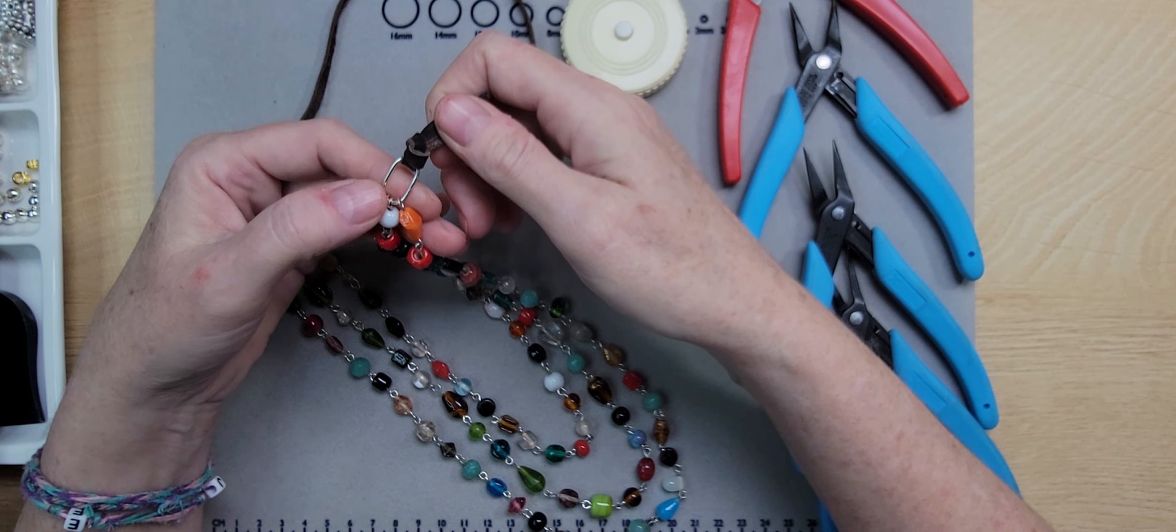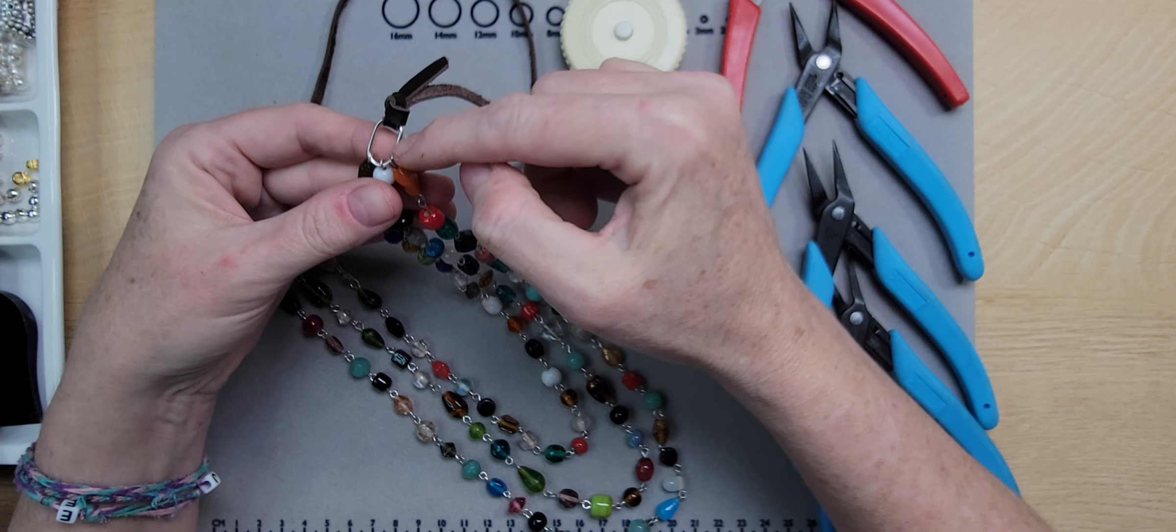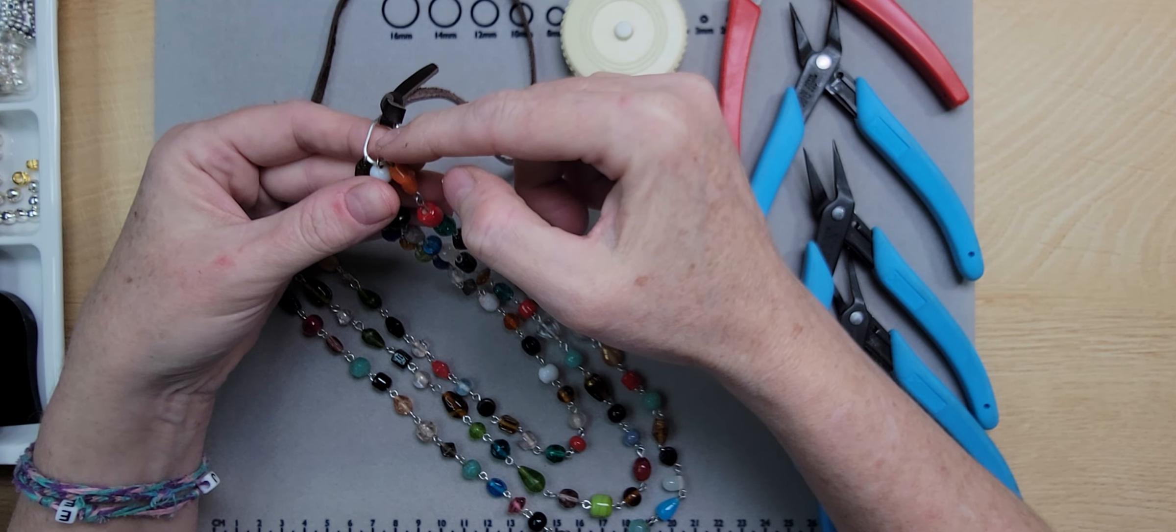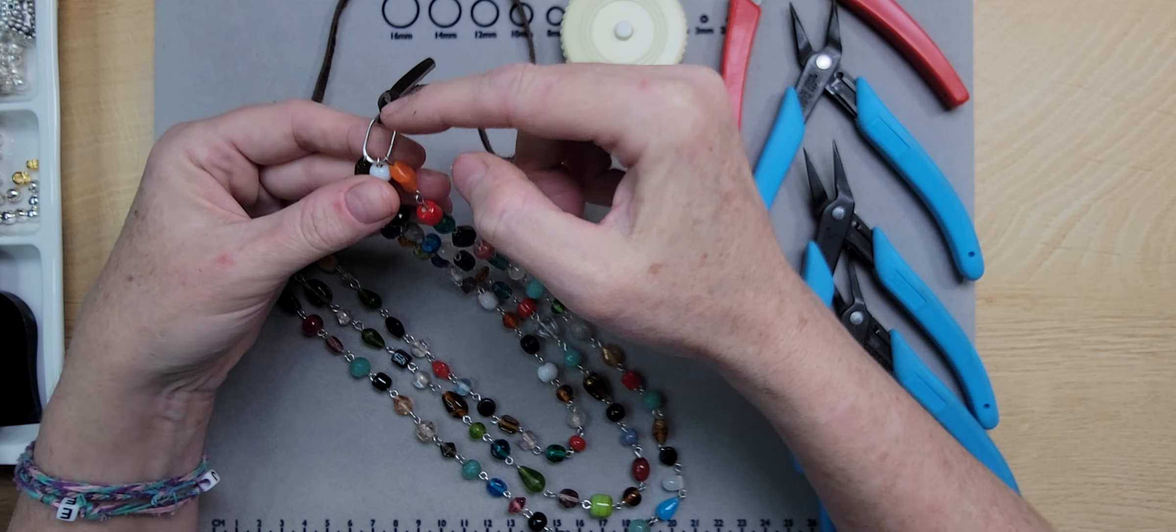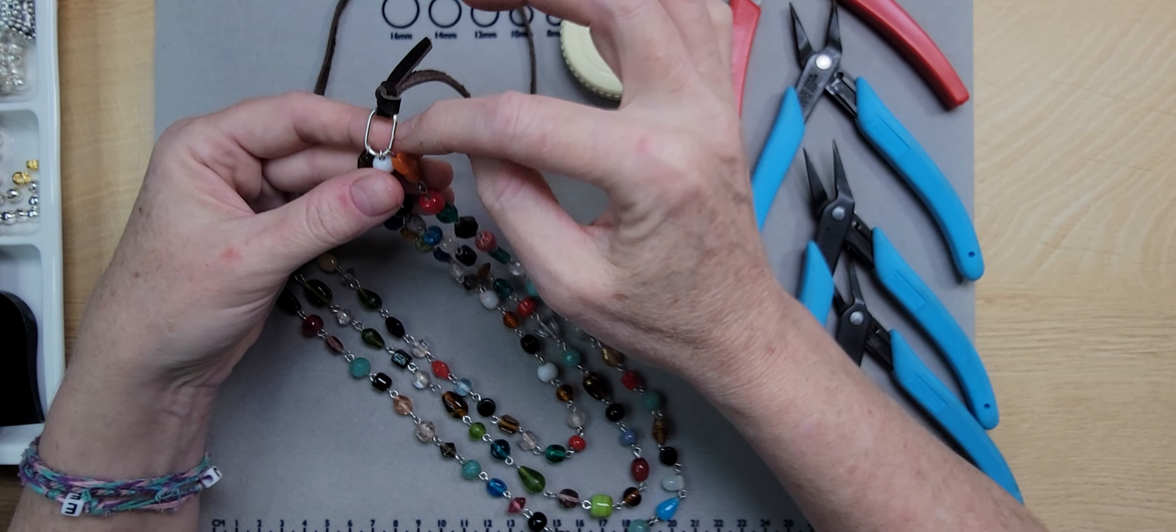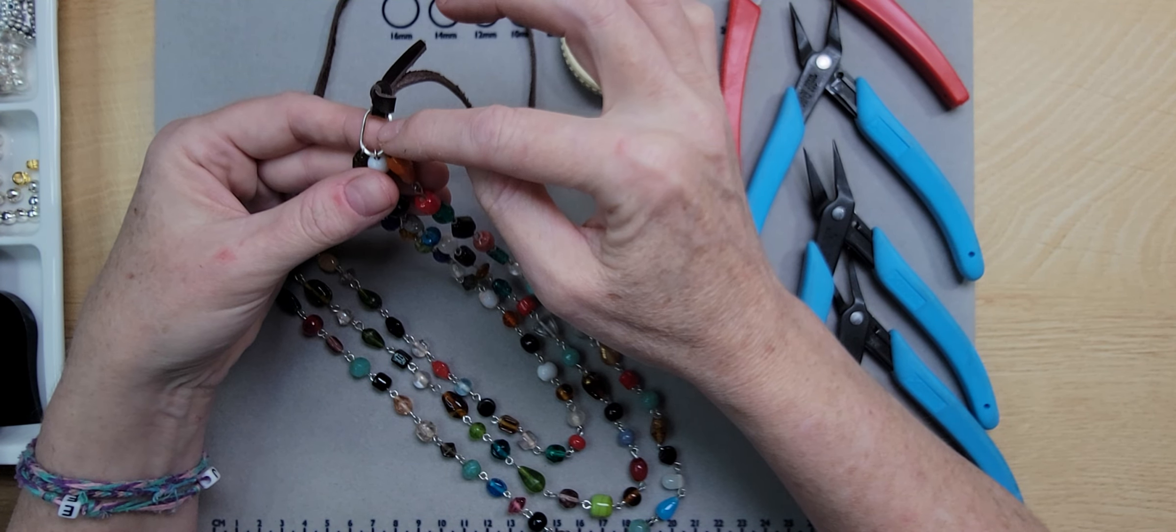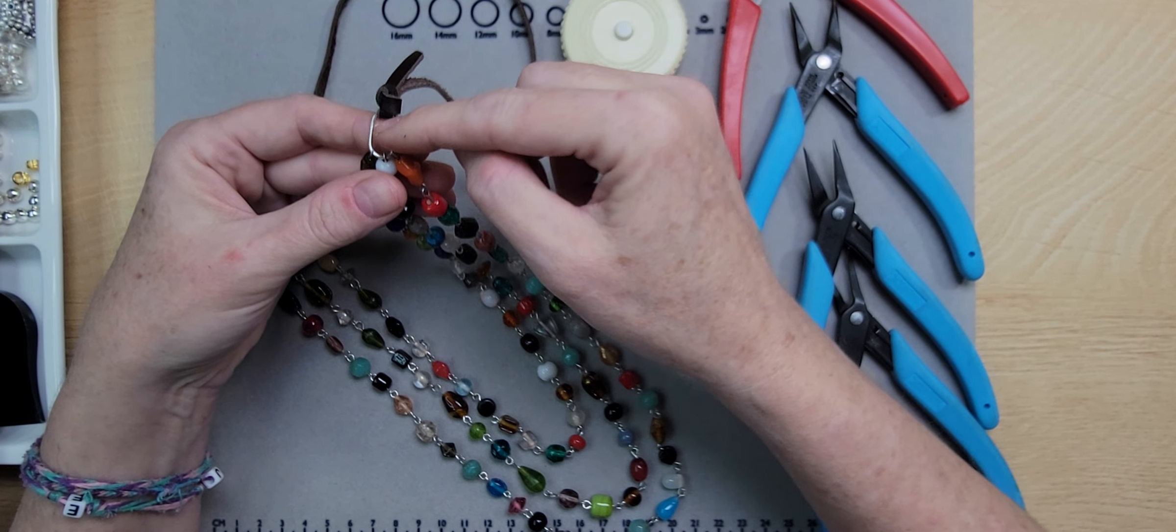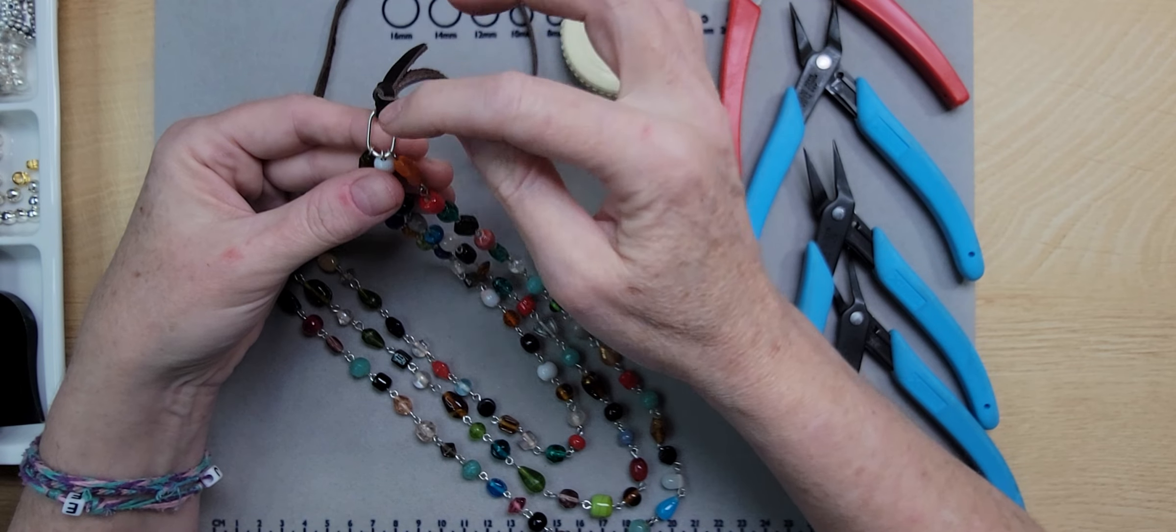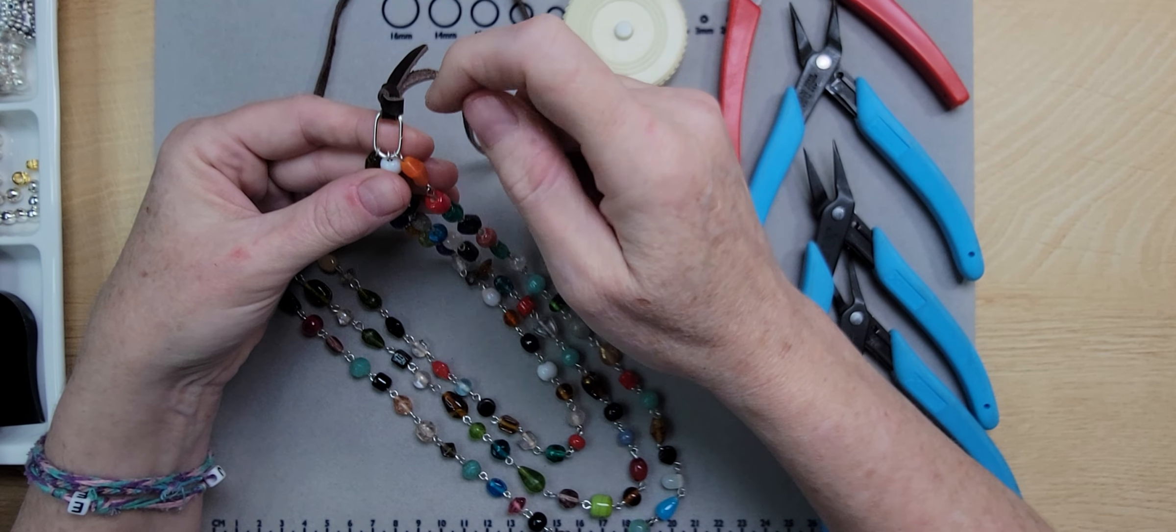To the oval jump rings that I will have a tutorial on how to make uploading tomorrow. But I'm going to also show you today how you can do it with just round jump rings, which I have a tutorial about on the channel as well, and I will link them to this video.